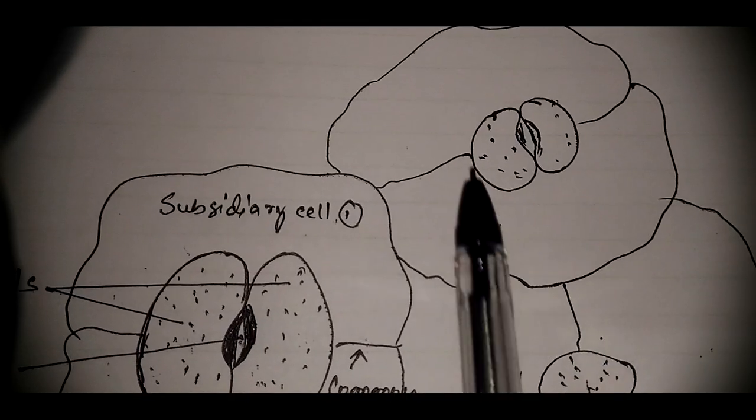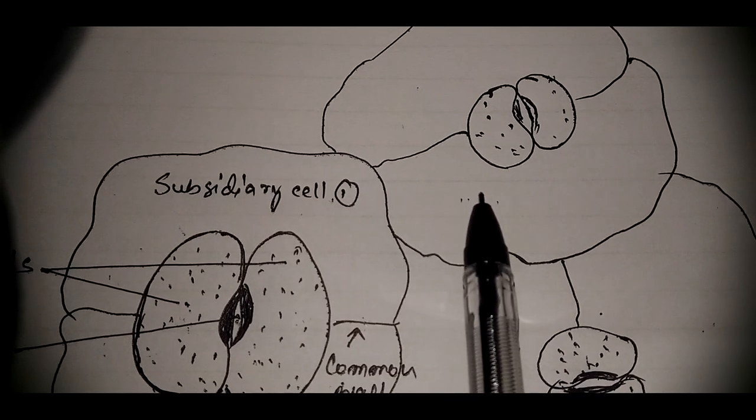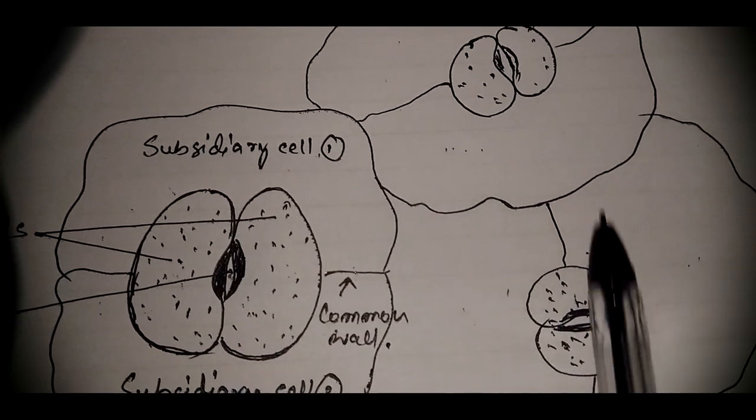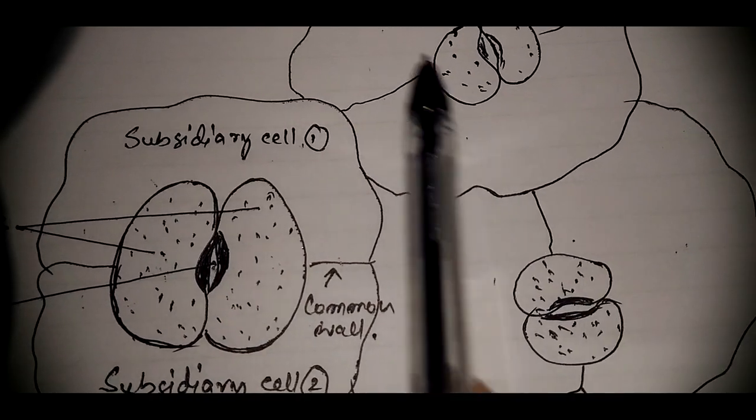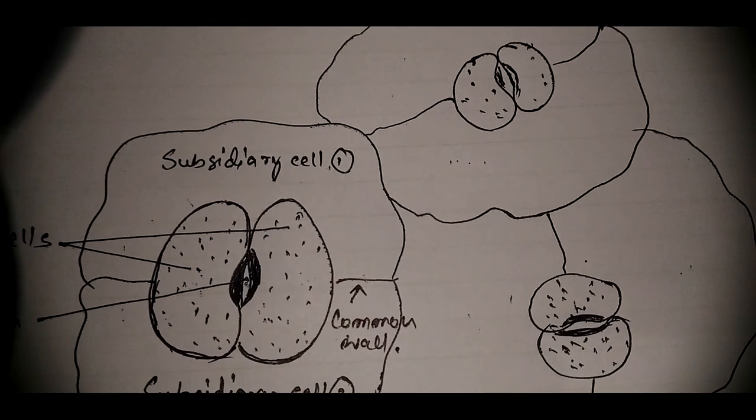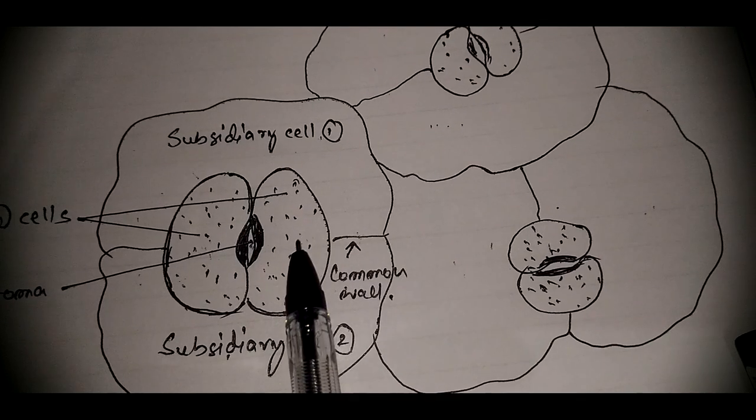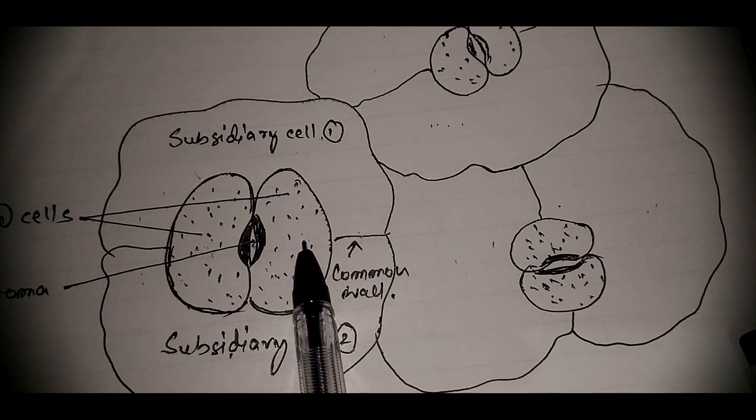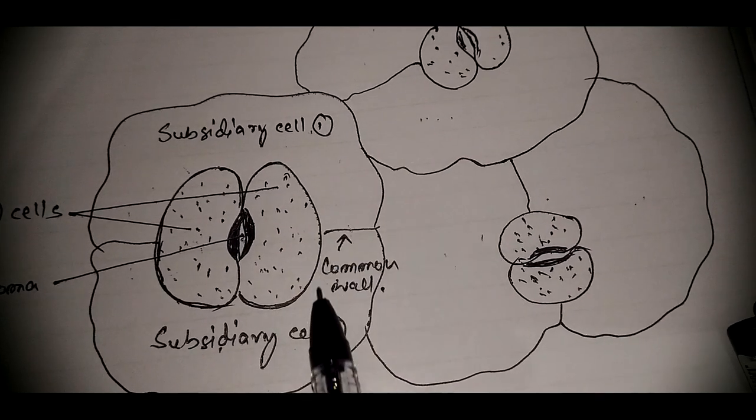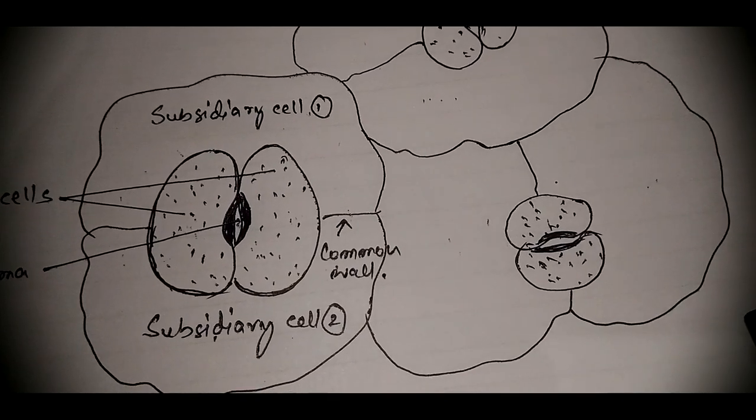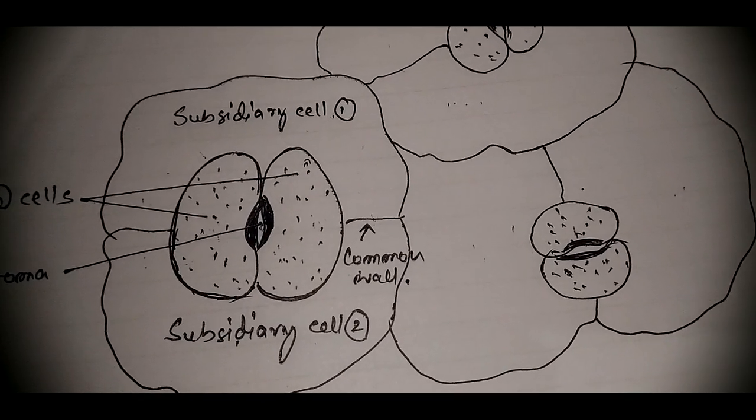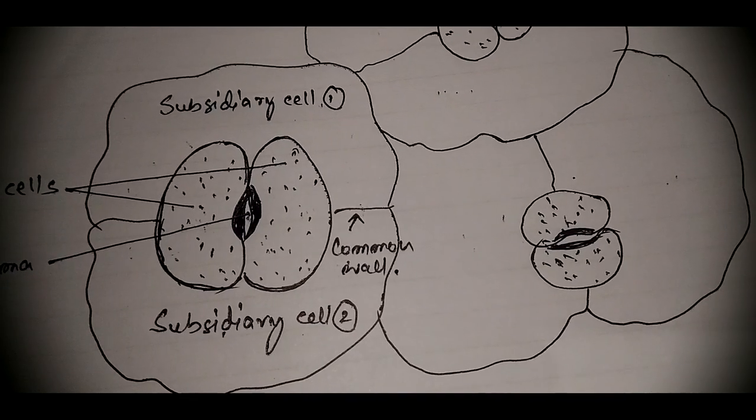Here also subsidiary cell one and subsidiary cell two. So in these three stomata it has been observed that in each case a stoma is surrounded by a pair of subsidiary cells. And the second point is...